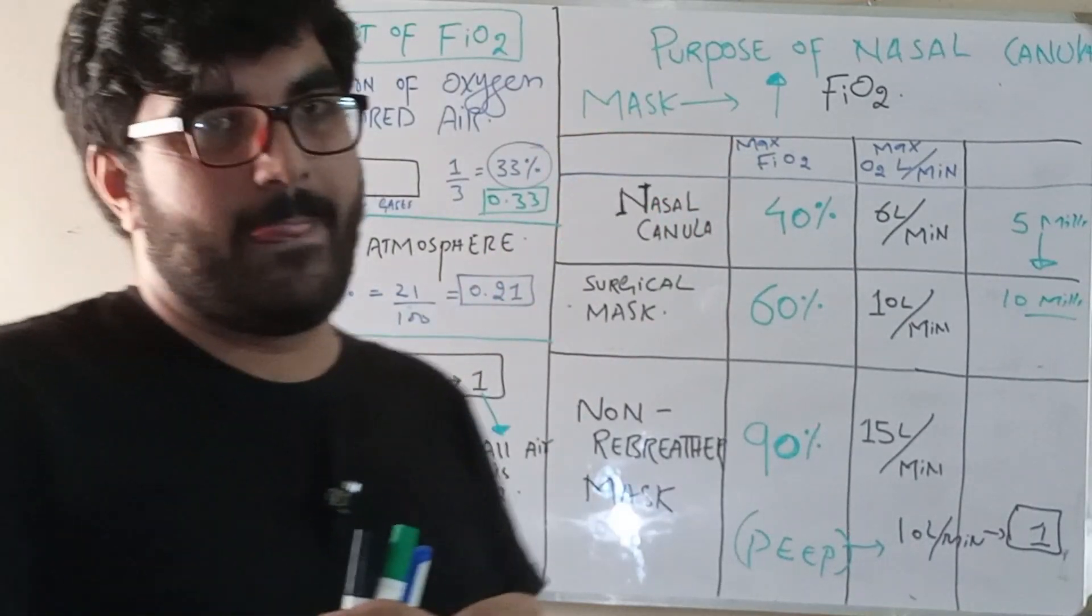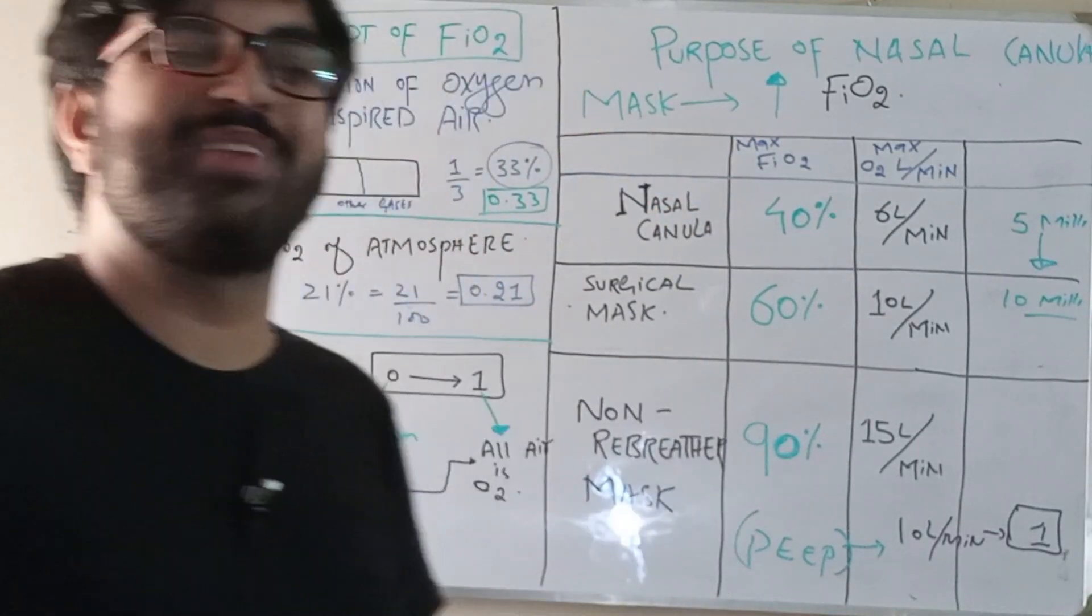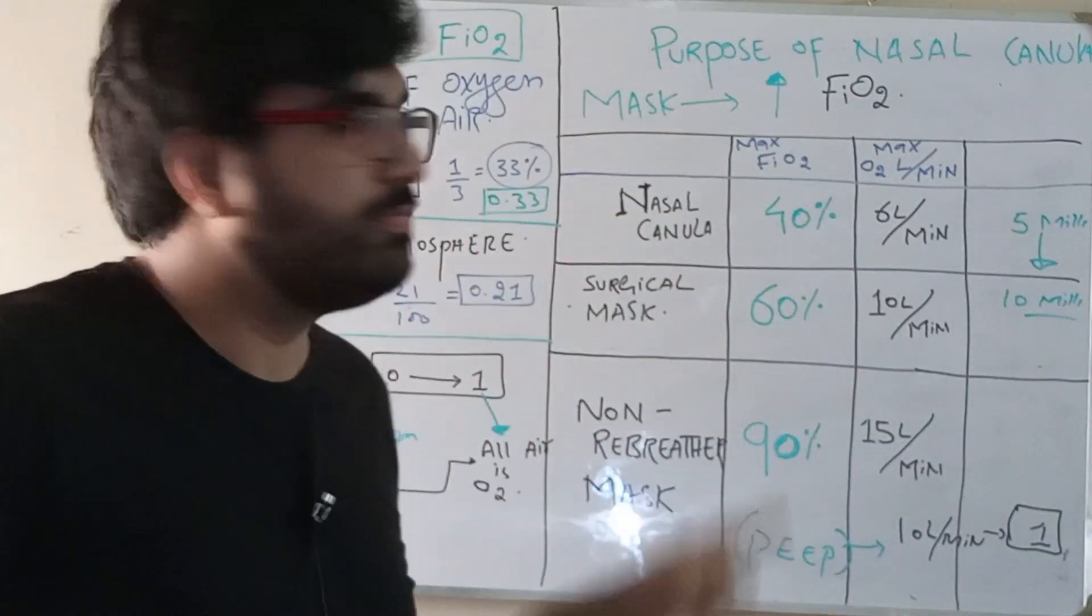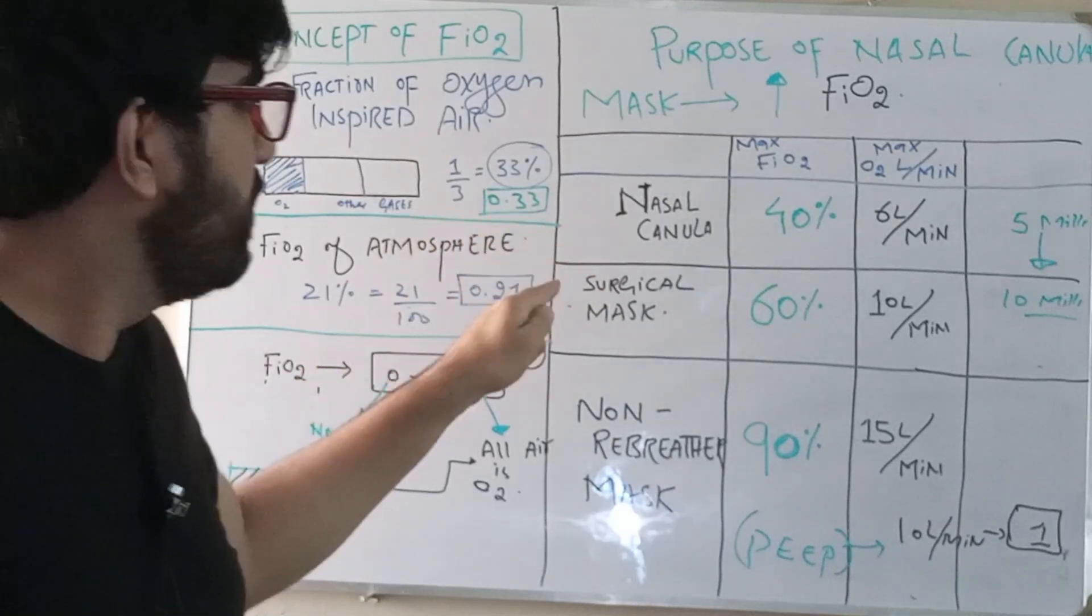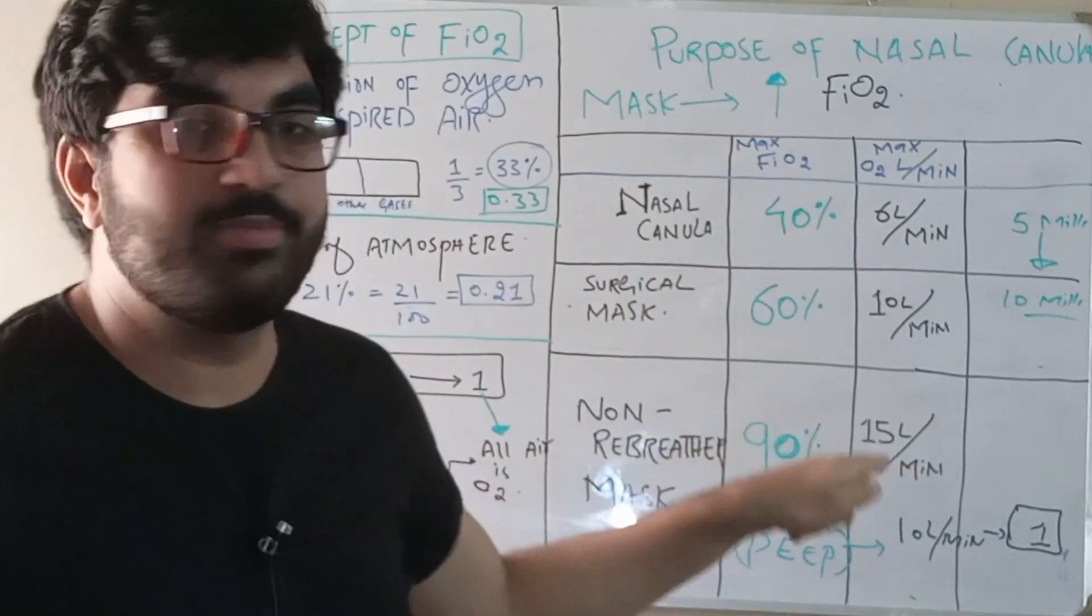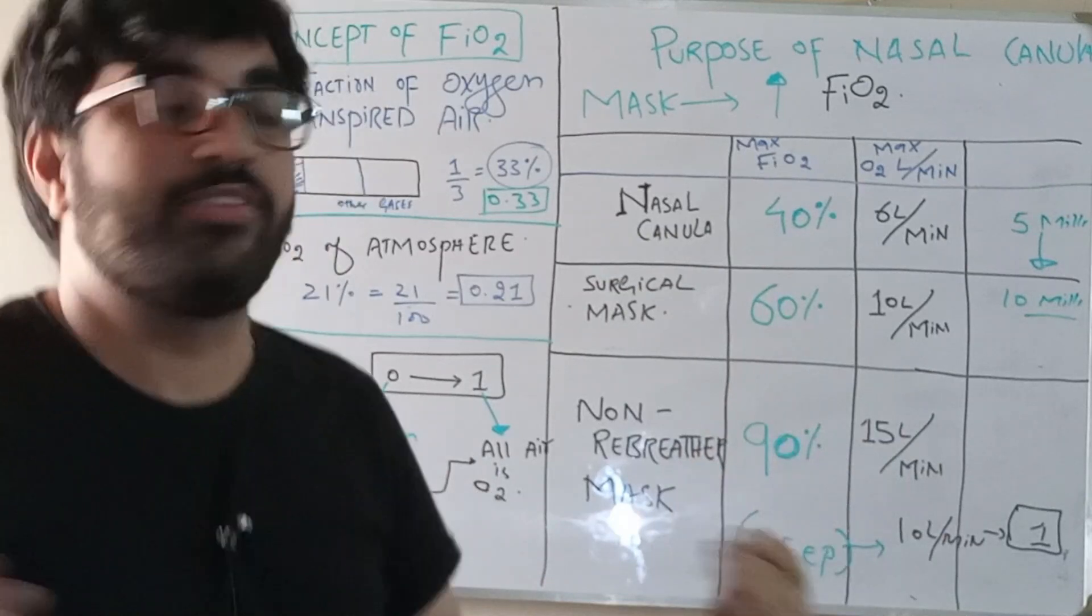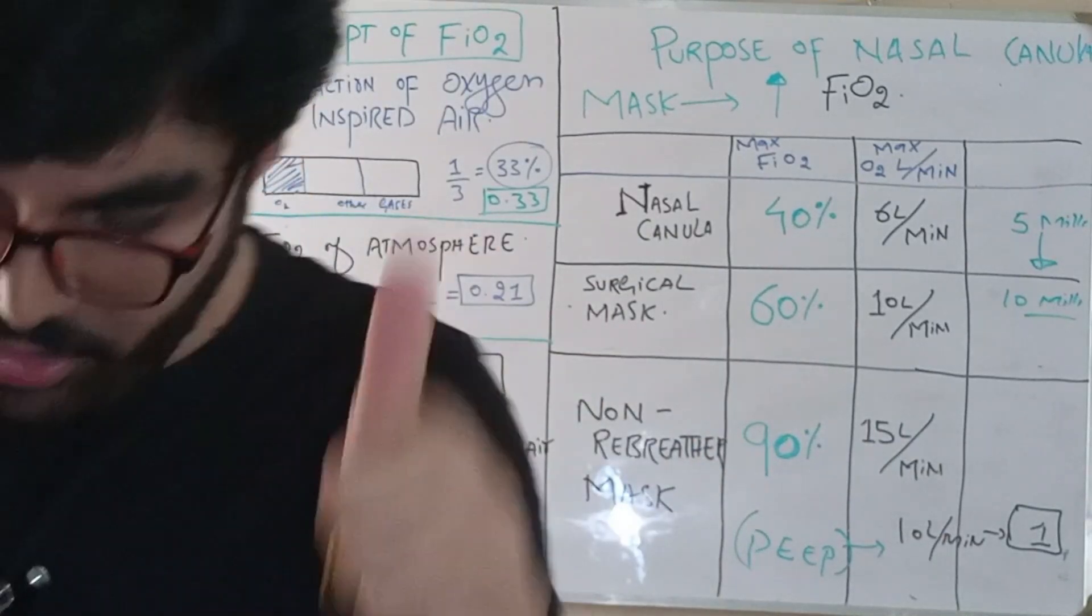First you take the SATS at room air. Patient is not making SATS, start with nasal cannula, reach up to there. Not maintaining SATS, next step is surgical mask. Not maintaining SATS, next step is non-rebreather mask. Not maintaining SATS, intubate. Thank you for watching.